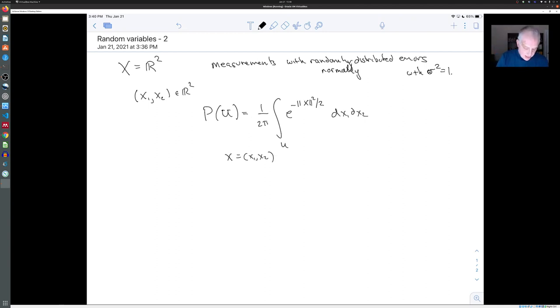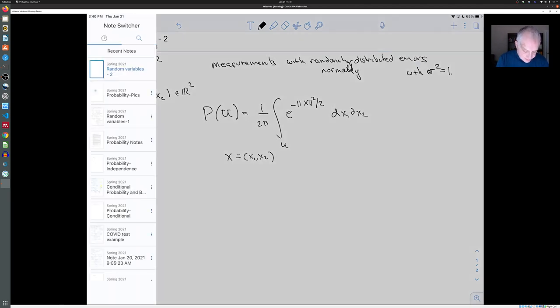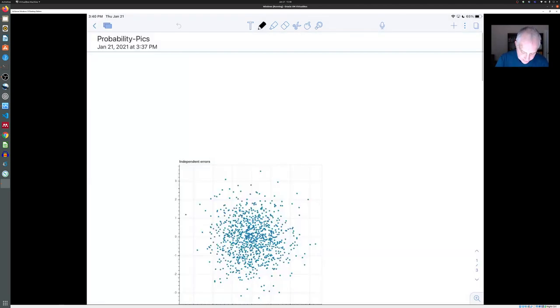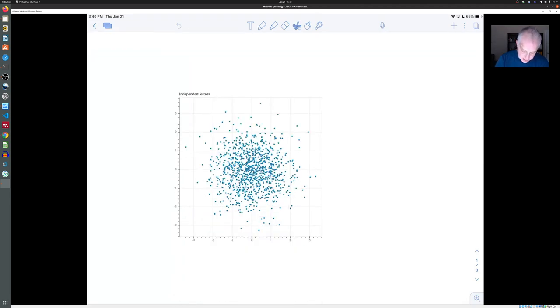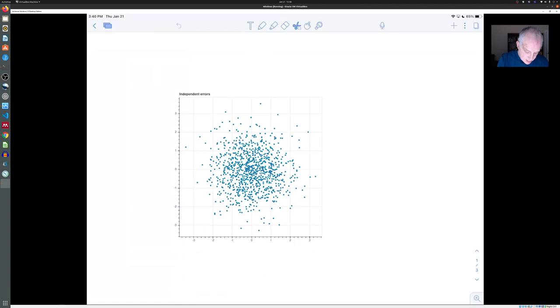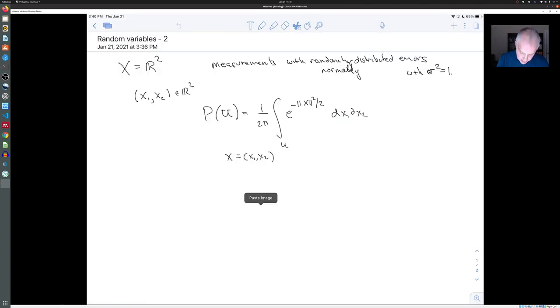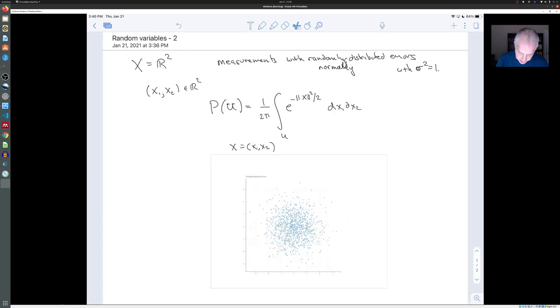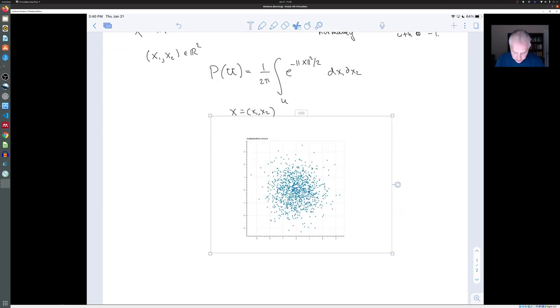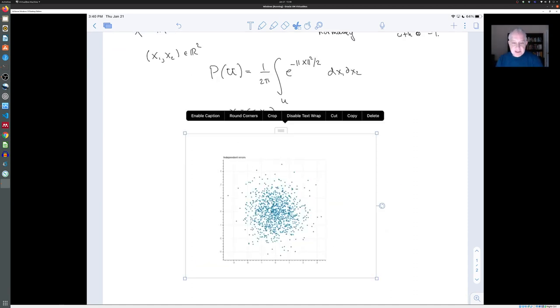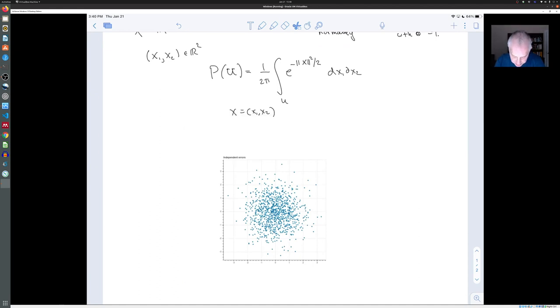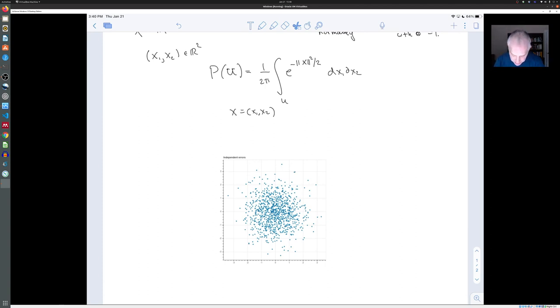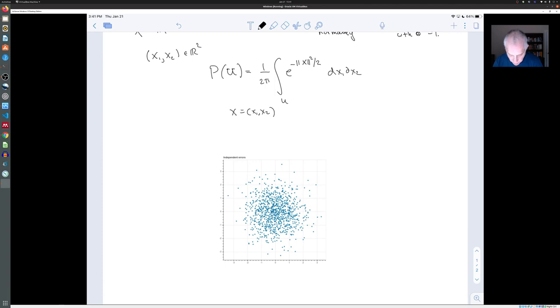And just to give you maybe something a little bit more concrete to hang on to, here's a picture of what's going on in this situation. This shows a collection of points. They're not centered, they're with variance one. And so each of these points is a combination of errors from the two independent measurements. So for instance, this point here means that you were off by something like 1.2 on your first measurement, and you were off by three on your second measurement.